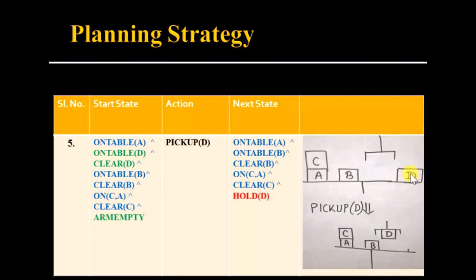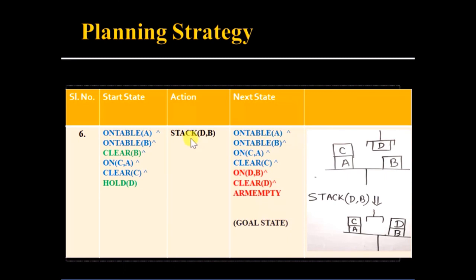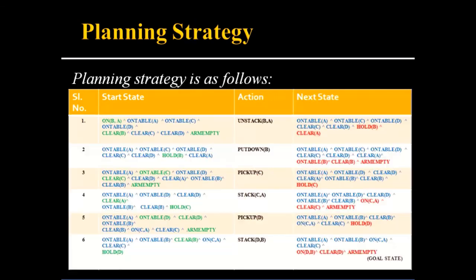Next we pick up D — the precondition is true and the arm is now Holding(D). Then we perform Stack(D,B) to put D on B — the precondition is true and we add the effect. At this point we have reached the goal state. So the complete planning strategy is: Unstack(B,A), Put-down(B), Pick-up(C), Stack(C,A), Pick-up(D), Stack(D,B) — and we reach the goal state. This is how we solve the block wall problem.